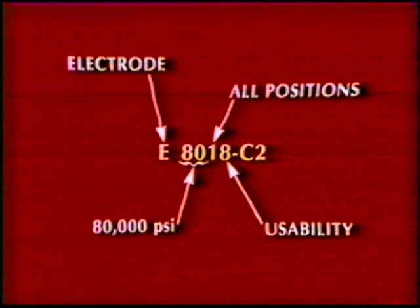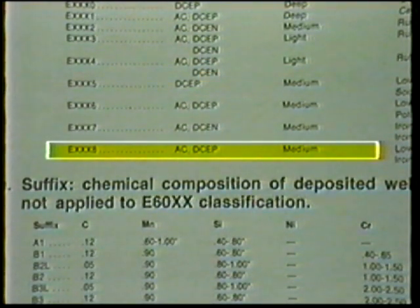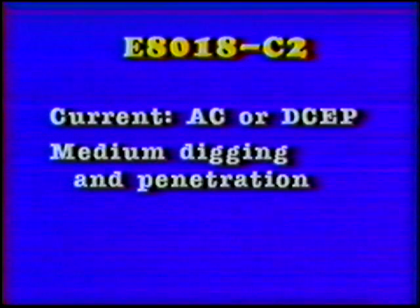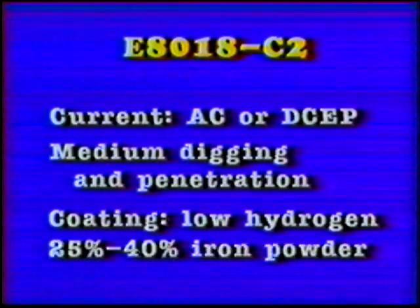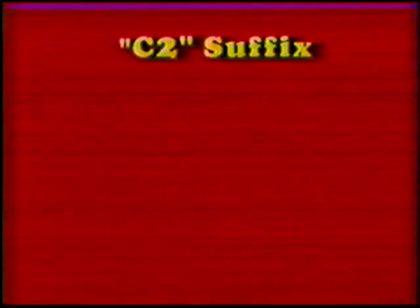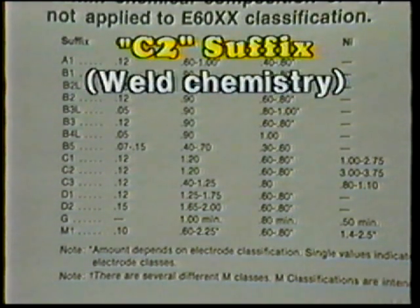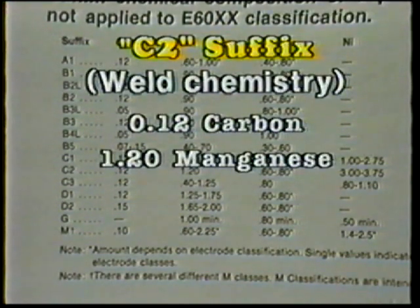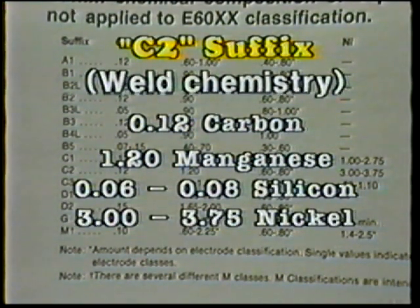The last digit signifies the usability and performance of the electrode. By checking your workbook or reference publication, you can find that the eight in this example means that the current to be used may be either alternating or direct current electrode positive, that the arc will produce medium digging with medium penetration, and the flux coating is of the low hydrogen type and contains 25 to 40 percent iron powder. The suffix indicates the chemical composition of the weld deposit. C2 means the weld will contain 0.12% carbon, 1.2% manganese, 0.06–0.08% silicon, and 3 to 3.75% nickel.